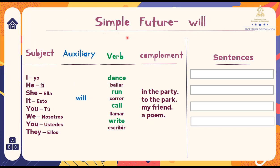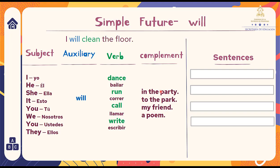Simple future with will. El futuro simple con will. I will clean the floor. Yo limpiaré el piso. Let's pay attention to this sentence structure. I need the subject 'I', the auxiliary will, a verb 'clean', and the complement 'the floor'. The structure is: Subject + auxiliary will + verb + complement. Necesito el sujeto, el auxiliar will, un verbo y el complemento.